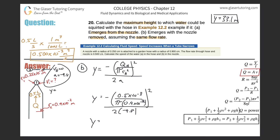Plugging in: 0.5 × 10⁻³ divided by (π × (0.9 × 10⁻²)²) gives about 1.96. Squaring that gives a numerator of about 3.86. Dividing by 2 × 9.8 gives approximately y ≈ 0.197 meters.